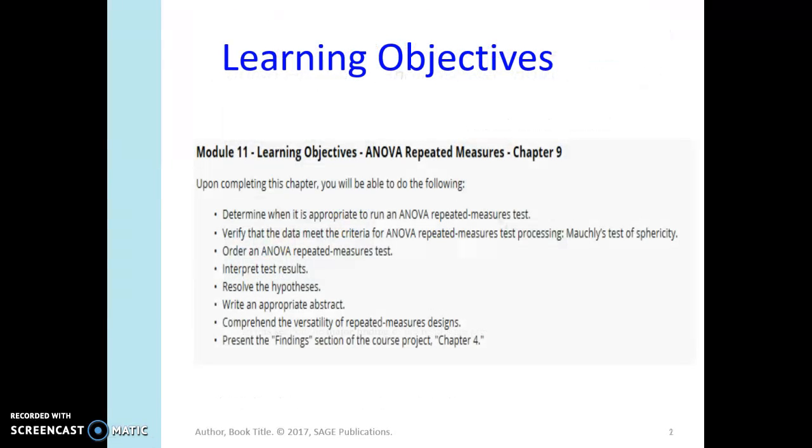Our objectives for this lesson are to determine when it is appropriate to run an ANOVA repeated measures test, verify that the data meet the criteria for ANOVA repeated measures. There's only one, and that's Mauchly's test of sphericity. Order an ANOVA repeated measures test, interpret the test results, resolve the hypotheses, write an appropriate abstract. We've been doing that long enough now that it should come second nature to you. Comprehend the versatility of the repeated measures design, and present the findings section of the course project.